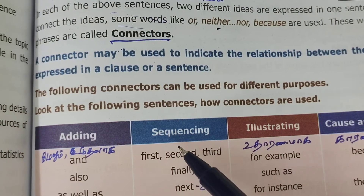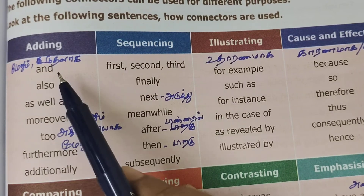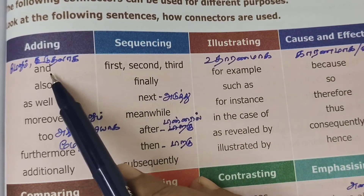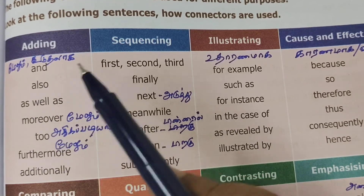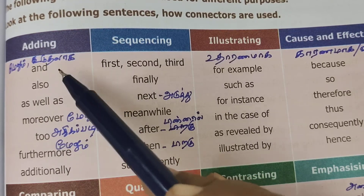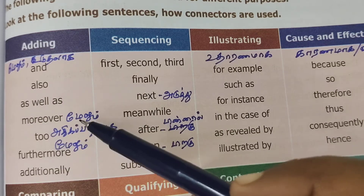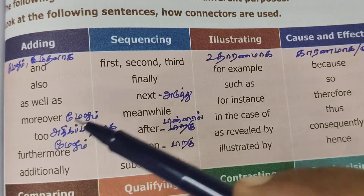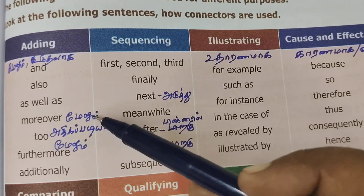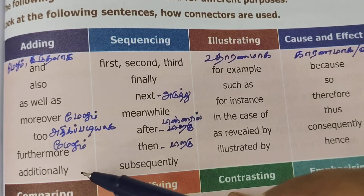There are examples. As you can see, it is in higher class. Now the category is 'adding'. Adding connectors include: 'and', 'also', 'as well as', 'moreover', 'too', and 'furthermore'. For example: 'Kala is a female. Adding — Kala is also a male.' 'Kala as well as a male.' Moreover, you talk about a topic and then add more ideas. 'Furthermore' is also used to add information.